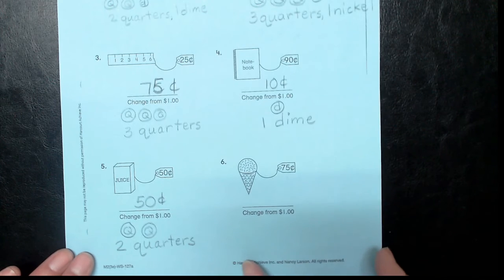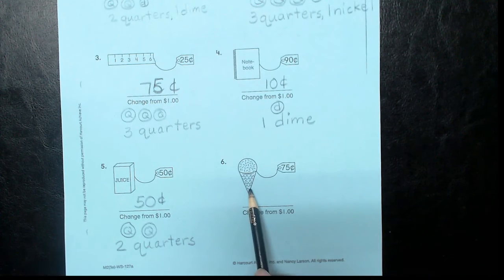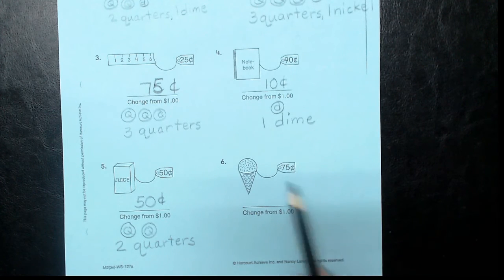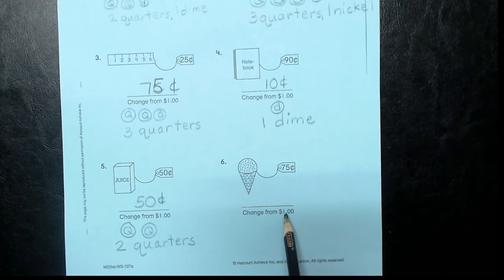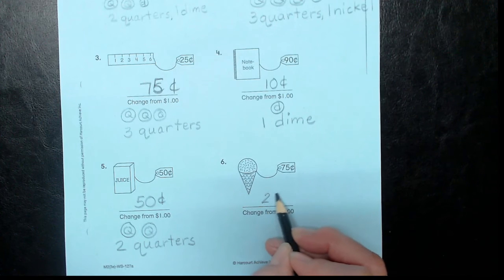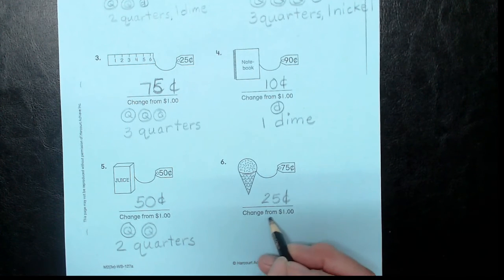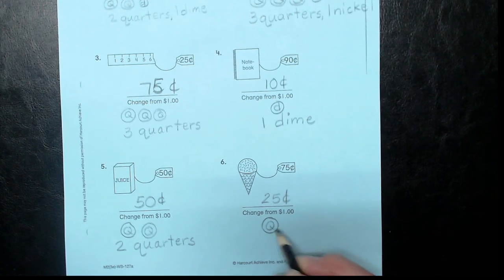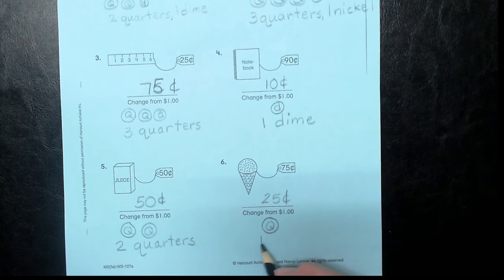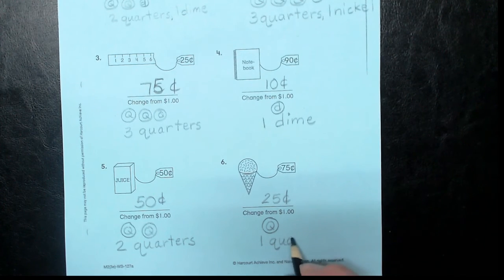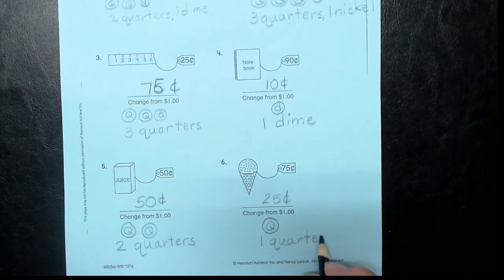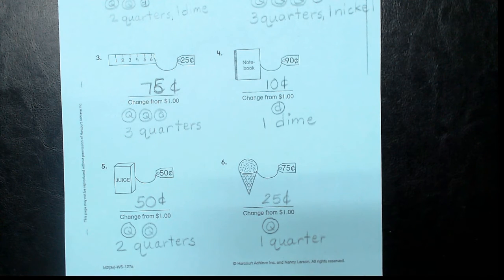And our last one, an ice cream cone or a snow cone costs 75 cents. What will your change be from one dollar? You will get back 25 cents. What coin? Just need one quarter. Now, there certainly are other quarters that make 25 cents, but that is most likely what you would get back. We always want to think about what's the least number of coins that we can use to make our change.